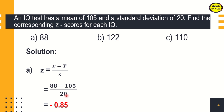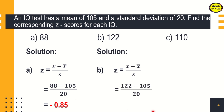Since the value of our z-score is negative, therefore 88 is below the mean. Next, if our score is 122, using the same formula, we substitute: 122 minus 105 divided by 20. The answer is 0.85, which is positive. Therefore, 122 is above the mean.